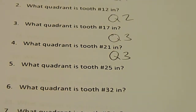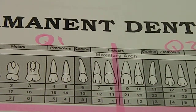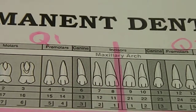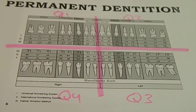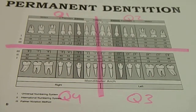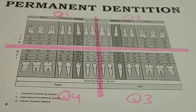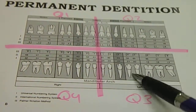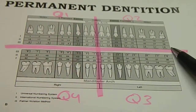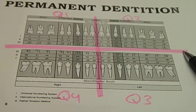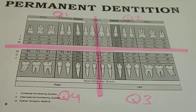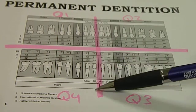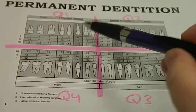We're going to be talking about the quadrants. I drew here the quadrants of the dentition for the permanent dentition — quadrants one, two, three, and four. Basically, we draw a line between the arches: here's the maxillary arch and the mandibular arch, so that's our horizontal line, and then a vertical line right between the central incisors.